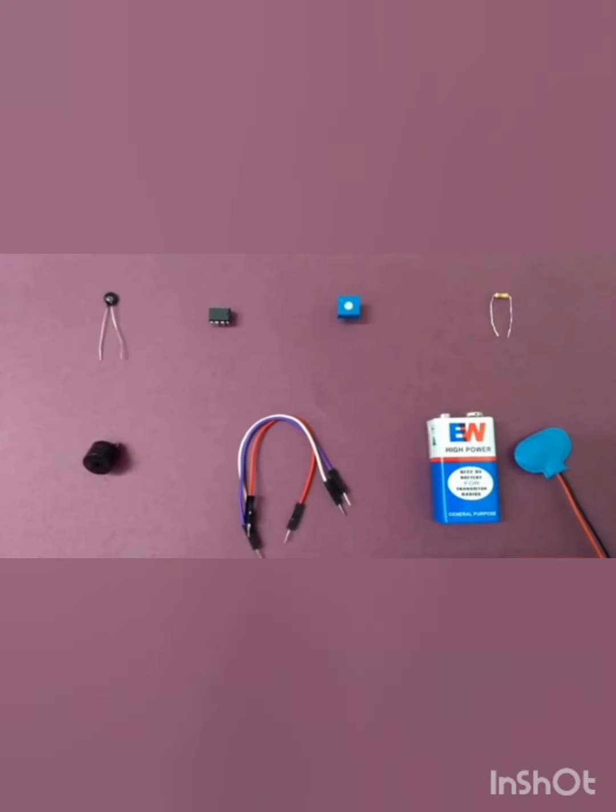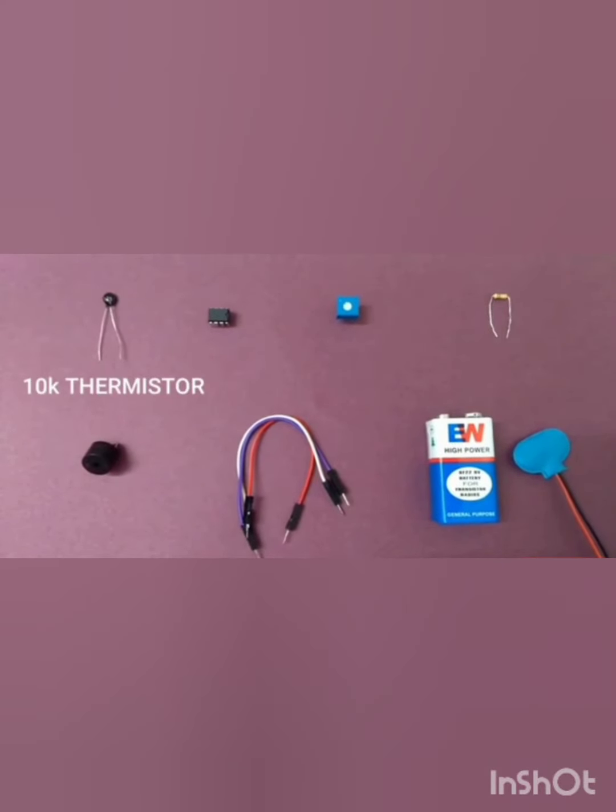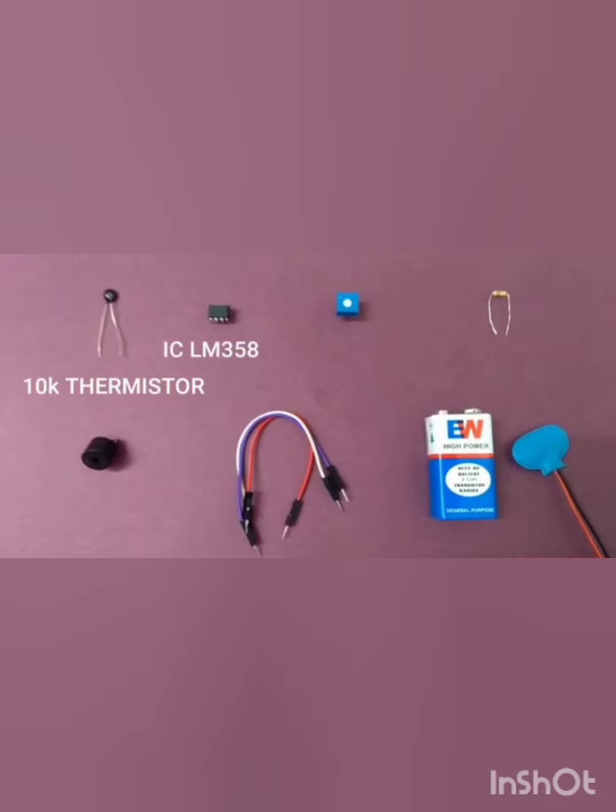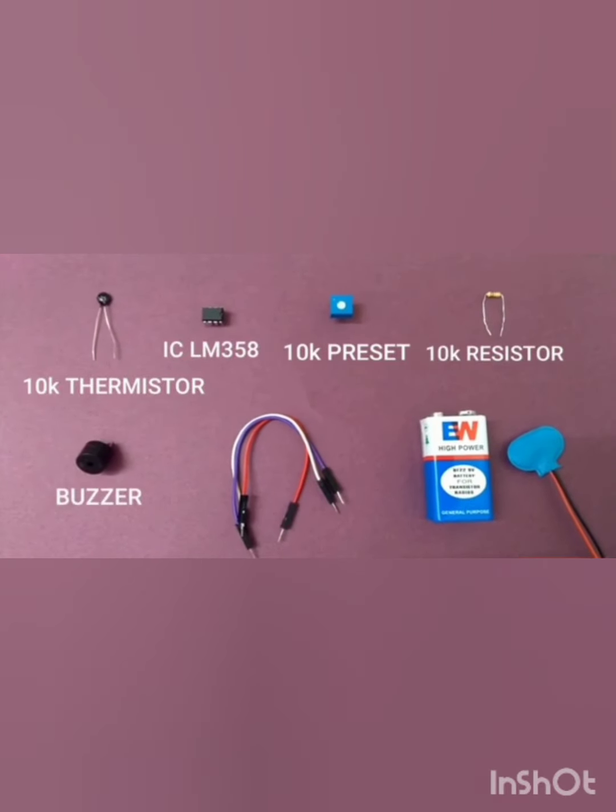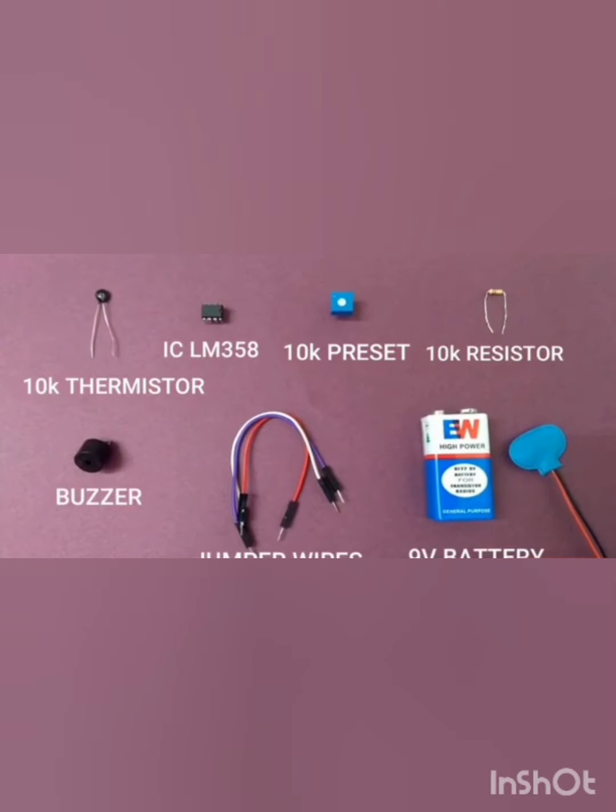These are the components we will need to build this circuit: a 10K thermistor, ICLM 358, a 10K preset, a 10K resistor, buzzer, jumper wires and a 9V battery with connector.